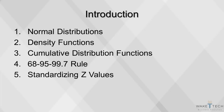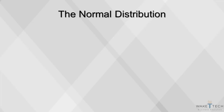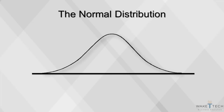This video will cover normal distributions, the probability density function, cumulative distribution functions, the 68-95-99.7 rule, and standardizing z values. The single most important distribution in statistics is the normal distribution. It is a continuous distribution and the basis of the familiar symmetric bell-shaped curve. The mean of the normal distribution is in the center, and the standard deviations are marked at equal distances from the mean.